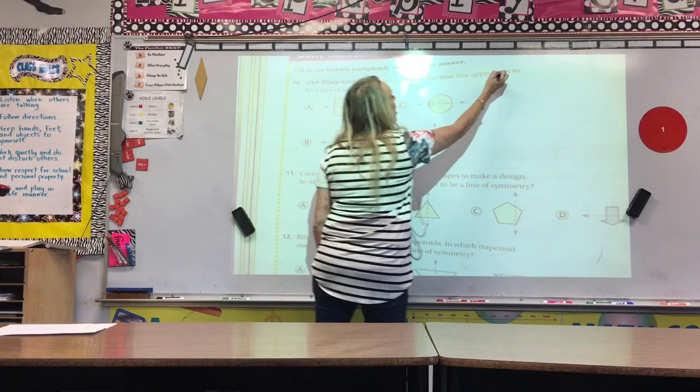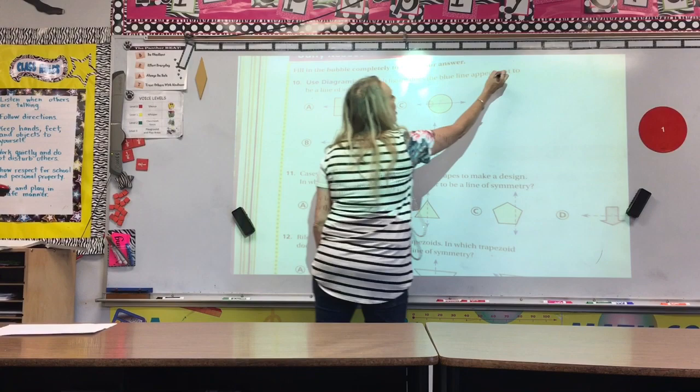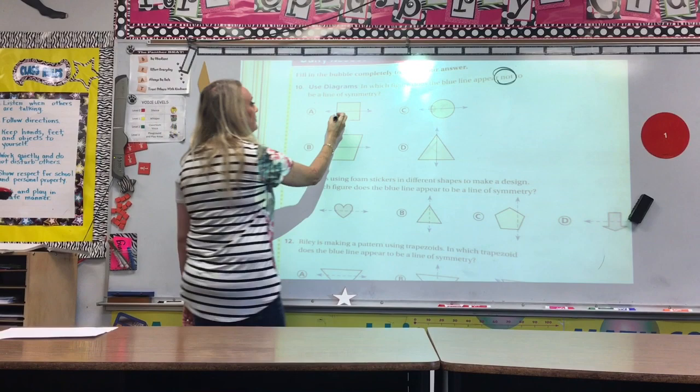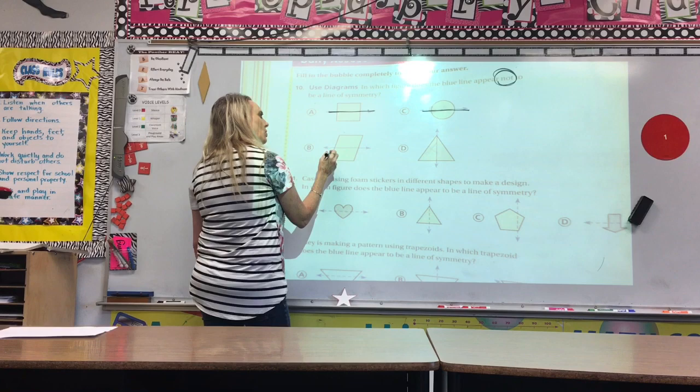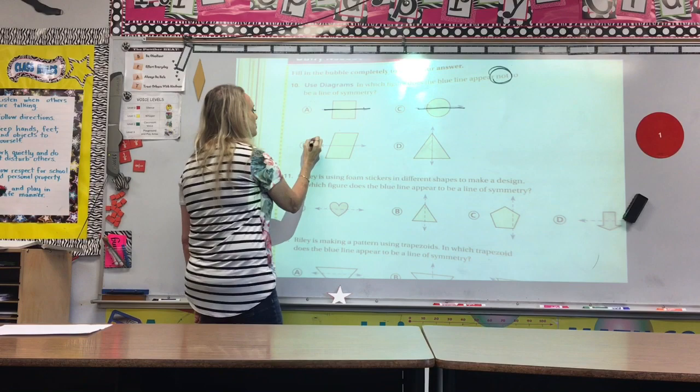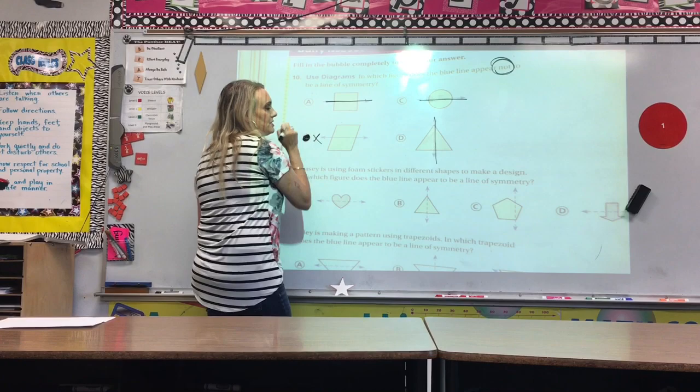A, it says which figure does the blue line appear not to be a line of symmetry. Circle your not three times. Obviously, the square has one. The circle has one. Oh, parallelograms. Do they have a line of symmetry? No, they do not. And, the triangle vertically does. So, it is B, does not.